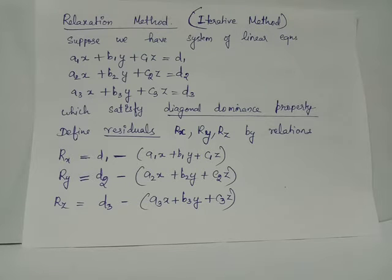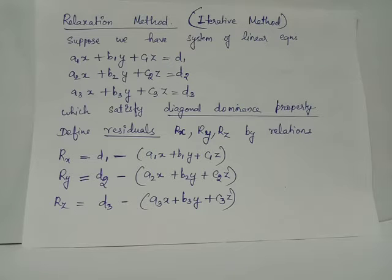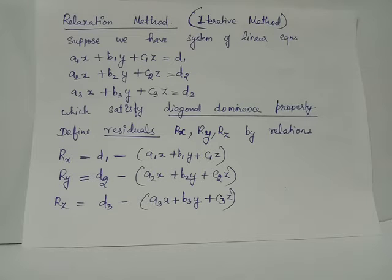When delta y equals 1 and x and z are both zero, we have rx equals d1 minus b1, ry equals d2 minus b2, and rz equals d3 minus b3. When y is incremented from 0 to 1, rx is decremented by b1, ry by b2, and rz by b3. Thus delta rx equals minus b1, delta ry equals minus b2, and delta rz equals minus b3.